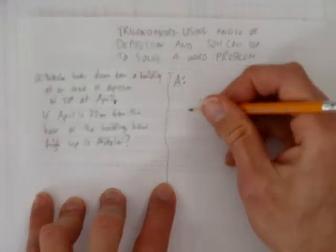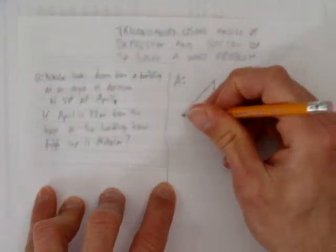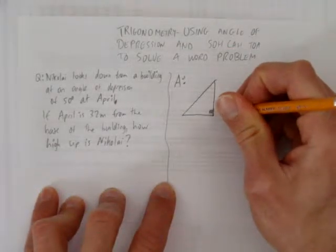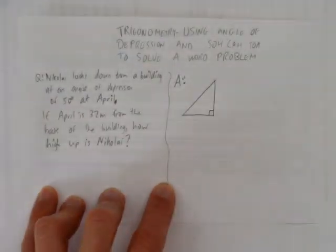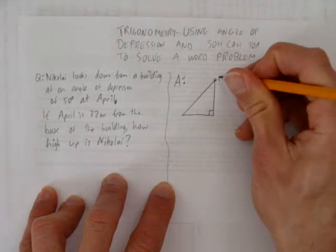Well, to start, let's draw a diagram. And we'll assume that the building is 90 degrees straight up from the ground. That's a good assumption. So here's Nikolai. I'll give him an N.